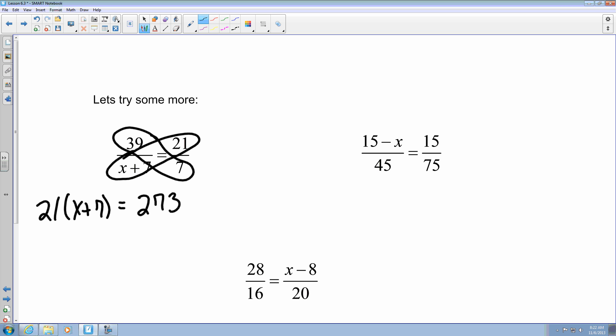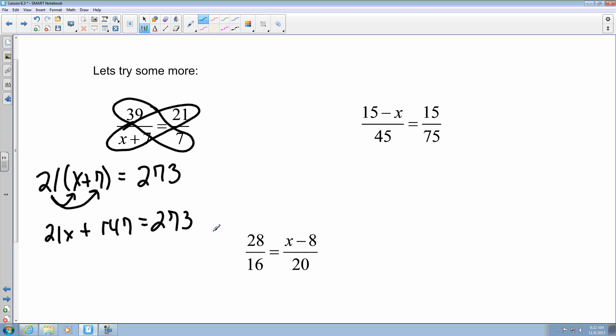I'm going to use the distributive property here, so I'm going to multiply this, so it gives me 21x plus 21 times 7, which is right here, which gives me 147 equals 273. So now I'm going to subtract 147 to both sides. So now I've got 21x here equals 273 minus 147. That gives me 126.